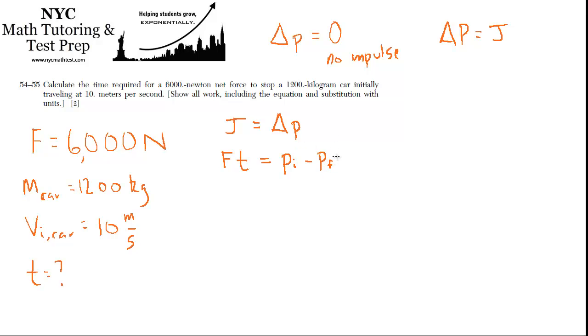What was the momentum at the end? Well, it says that this impulse, the 6,000 newton force, was used to stop the car. So the final momentum is zero, because at the end the car is stopped. So now we just have Ft equals initial momentum.